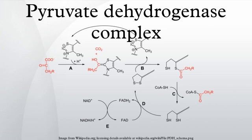The carbon dioxide produced by this reaction is non-polar and small, and can diffuse out of the mitochondria and out of the cell. In prokaryotes, which have no mitochondria, this reaction is either carried out in the cytosol, or not at all.